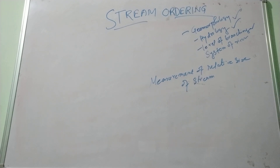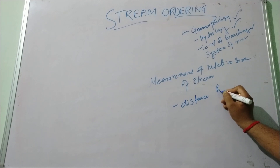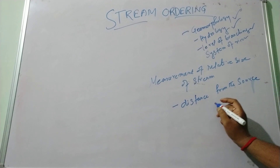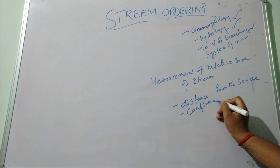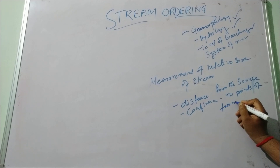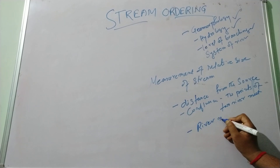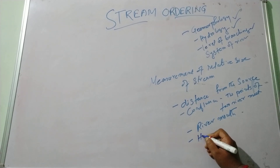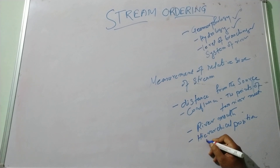This section of the river is basically based on the distance from the source, their confluence — that is, where the points of the river meet — the bottom of the river mouth, and their hierarchical position within the river system.